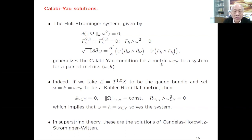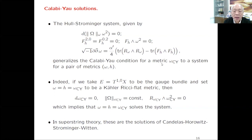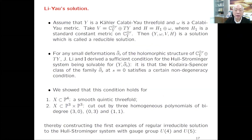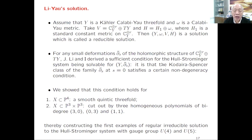This solves the original classification question proposed by Candelas, Horowitz, Strominger, and Witten. But it can also be non-trivial: we could take the vector bundle to be different from the tangent bundle. For example, take the Kähler Calabi-Yau threefold Y and take trivial bundles—several copies of the trivial bundle over Y—and use the trivial metric on the trivial bundle with the Kähler metric from the Calabi-Yau condition. This trivially solves the Strominger system, but the vector bundle is reducible and the holonomy is still SU(3).